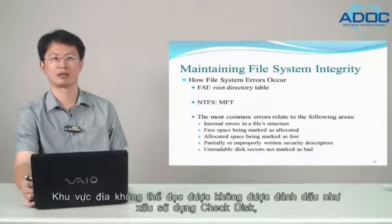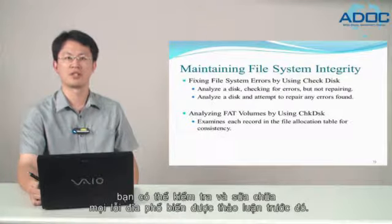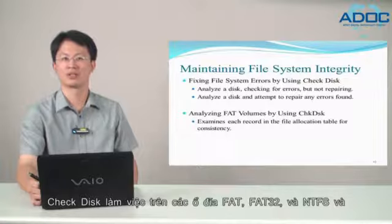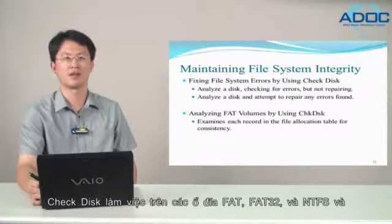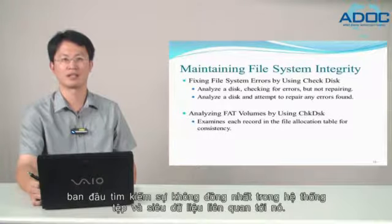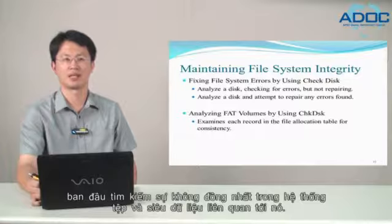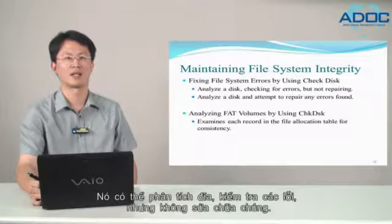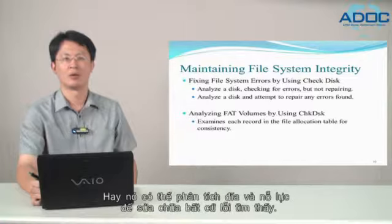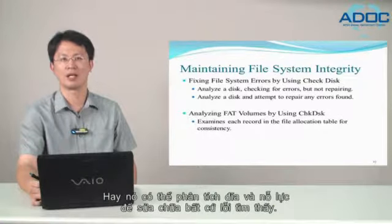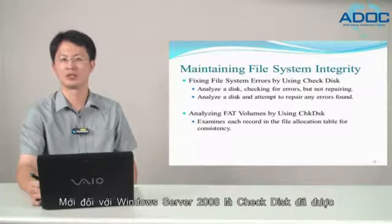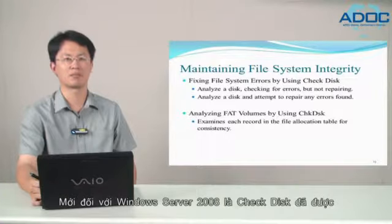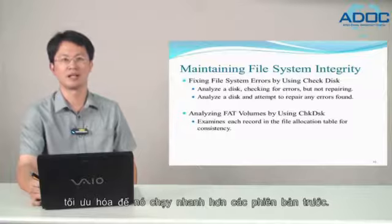Using Check Disk, you can check for and correct common disk errors. Check Disk works on FAT, FAT32, and NTFS volumes, and primarily looks for inconsistencies in the file system and its related metadata. Check Disk has two modes: it can analyze the disk checking for errors but not repairing them, or it can analyze the disk and attempt to repair any errors found. New for Windows Server 2008, Check Disk has been optimized to run faster than previous versions. You can run the graphical version of Check Disk using either Windows Explorer or Disk Manager.